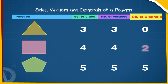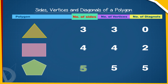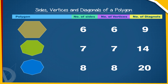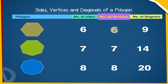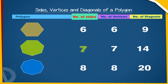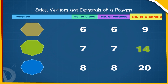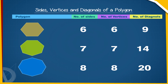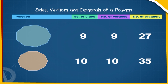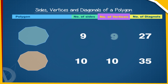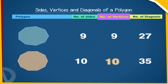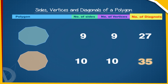A pentagon has 5 sides, 5 vertices, and 5 diagonals. A hexagon has 6 sides, 6 vertices, and 9 diagonals. A heptagon or septagon has 7 sides, 7 vertices, and 14 diagonals. An octagon has 8 sides, 8 vertices, and 20 diagonals. A nonagon has 9 sides, 9 vertices, and 27 diagonals. A decagon has 10 sides, 10 vertices, and 35 diagonals.